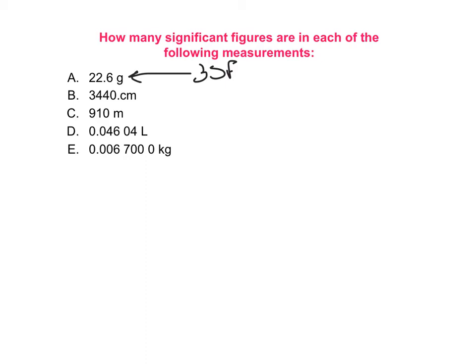For B, I have some zeros so I have to be careful. I have non-zero digits and a zero to the right of them. Zeros to the right only count if I see a decimal point, which I do. So this number has 1, 2, 3, 4 significant figures.